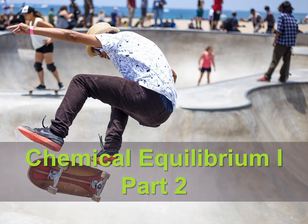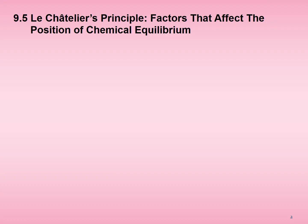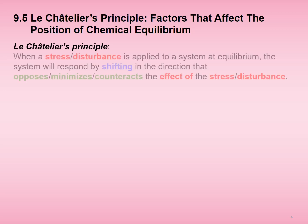Chemical Equilibrium 1 Part 2. Le Châtelier's principle states that when a stress or disturbance is applied to a system at equilibrium, the system will respond by shifting in the direction that opposes, minimizes, or counteracts the effect of the stress or disturbance.